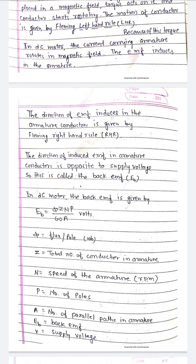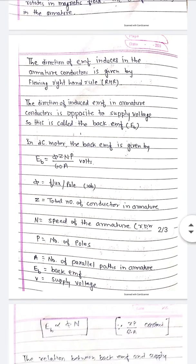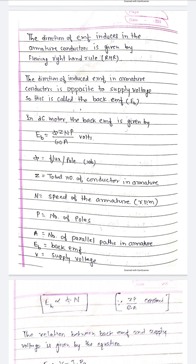P, number of poles. A, number of parallel paths in armature. EB, back EMF.